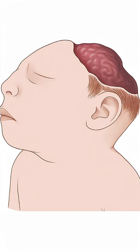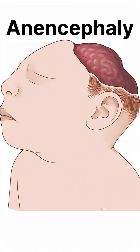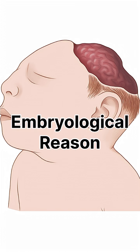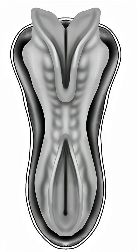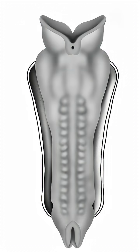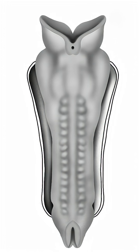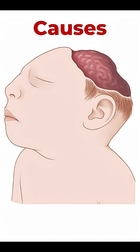What is this image showing? It is a neural tube defect called anencephaly, in which a baby is born without parts of the brain and skull. The embryological cause is due to the failure of closure of the anterior end of the neural tube during early pregnancy, which is usually closed by the 25th day.